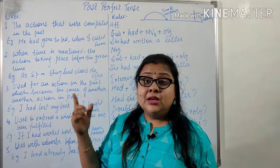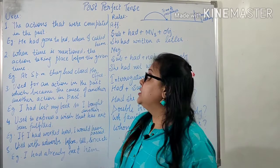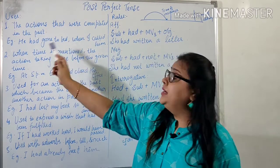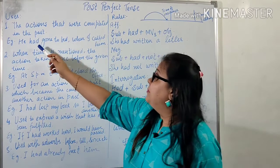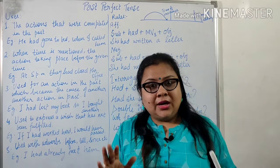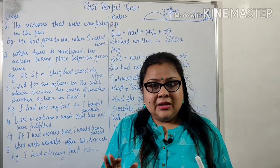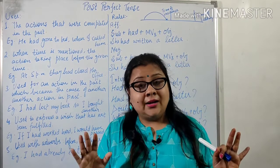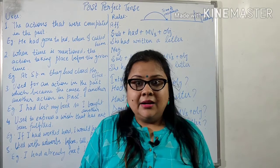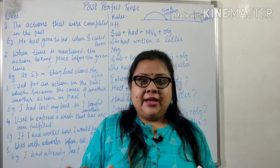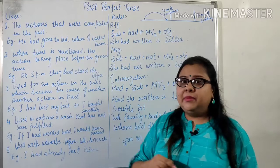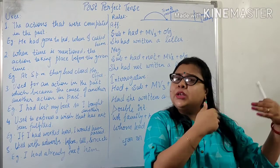Now talking about the uses of past perfect tense. First, it is used for actions that were completed in the past. For example: 'He had gone to bed when I called him' — jab maine usse bulaya, woh so ne ja chuka tha. Another example: 'She had her dinner before her husband came' — uske husband ke aane se pehle woh khana kha chuki thi.